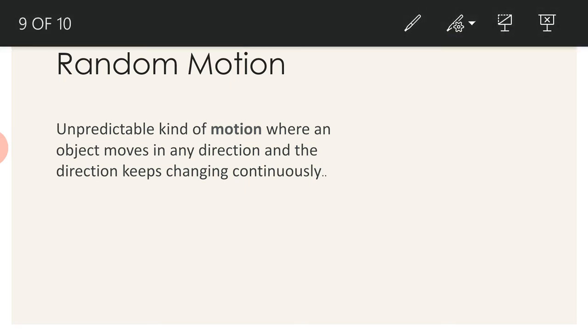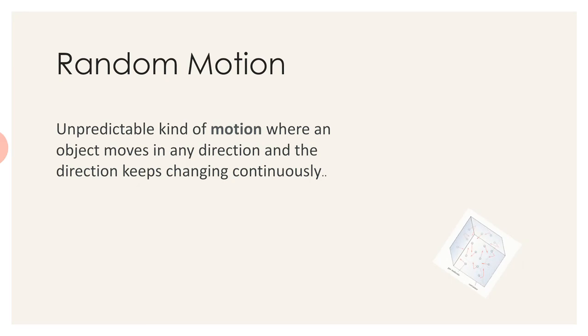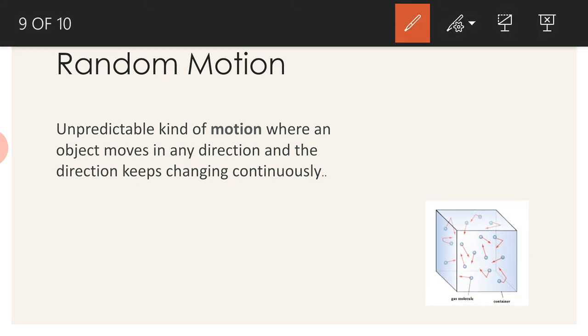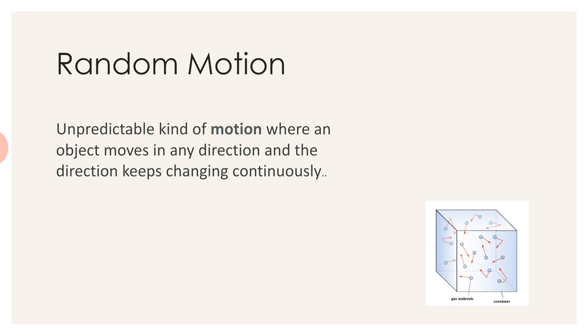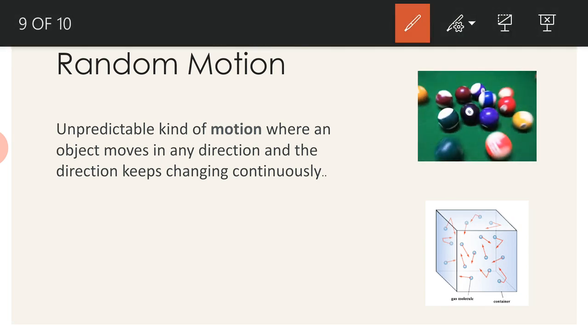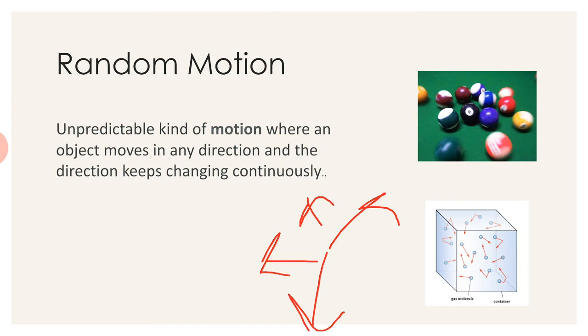The molecules keep running here and there inside the container. This motion of the molecules is called random motion because they move in any direction. It's not fixed that they take the same direction always. Another example is the balls in the game pool. When we hit the balls, all the balls move in different directions. These different directions are not fixed and they can take any path. The speed and direction keep changing, so it is considered a random motion.